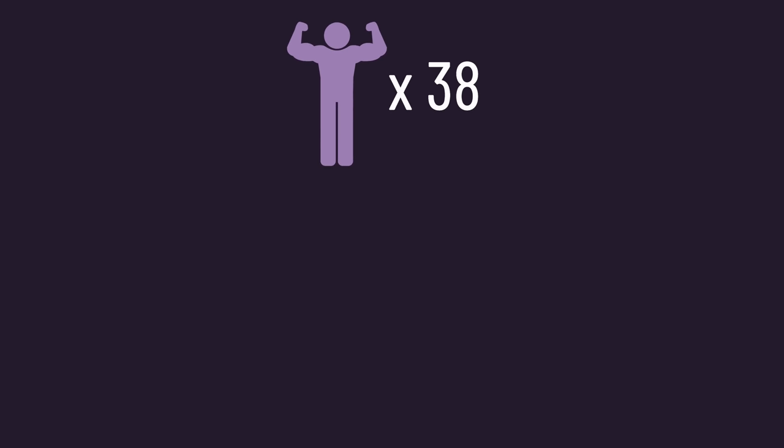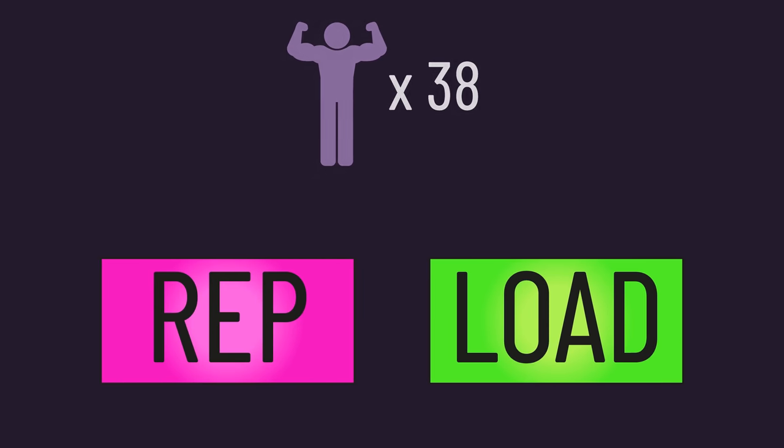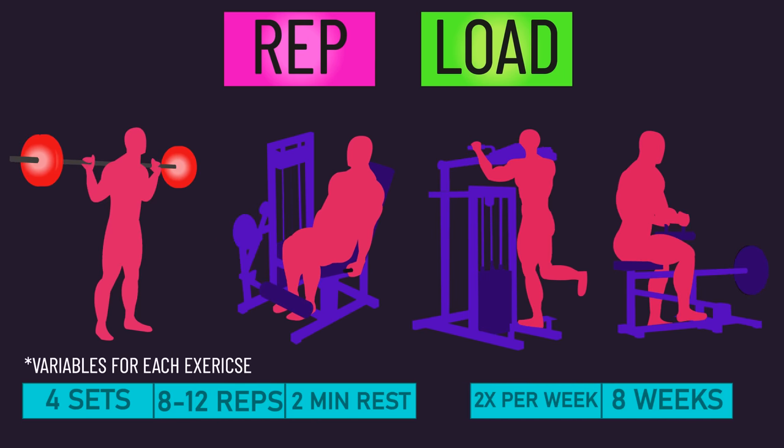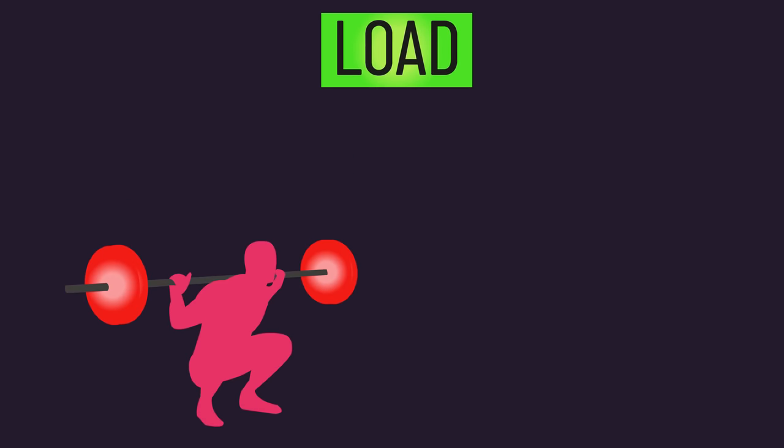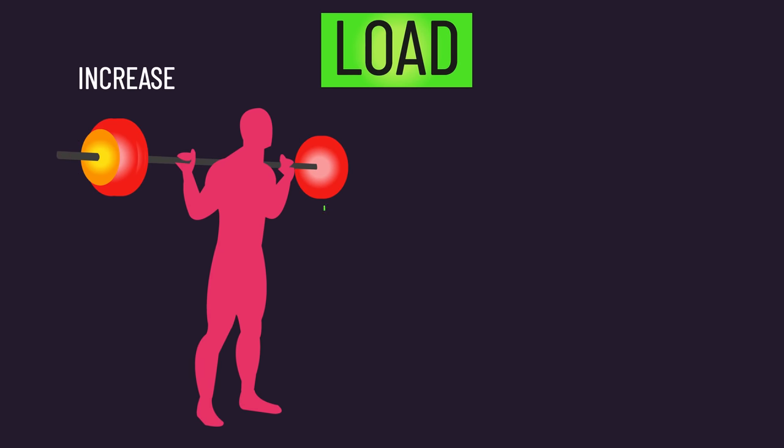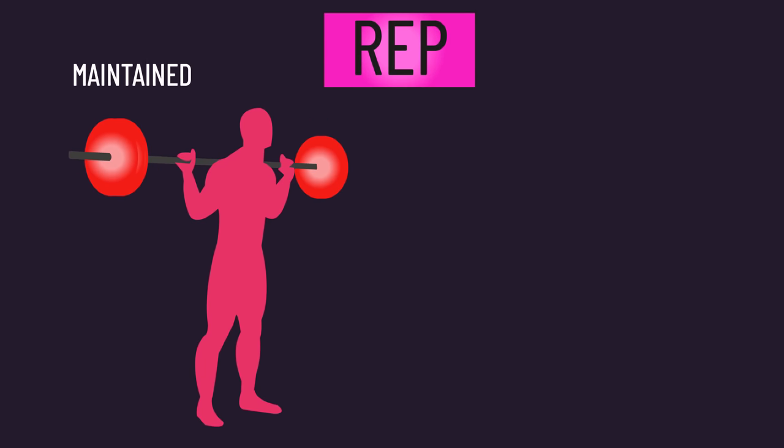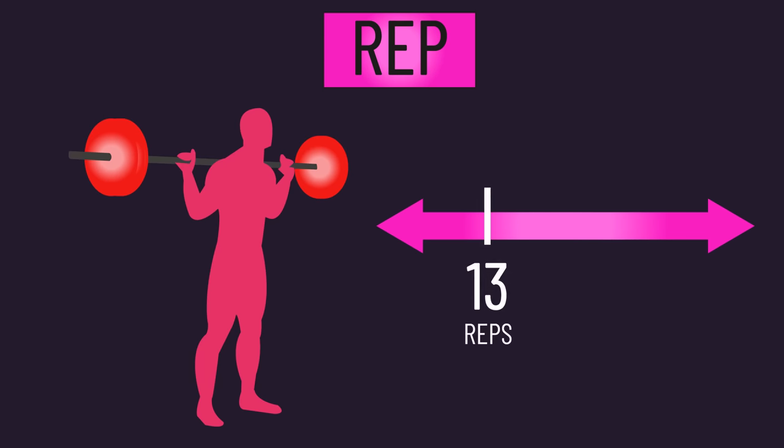38 trained individuals were randomly assigned to a load or rep group. All subjects trained these four lower body exercises with these variables in the first session. The load group attempted to increase the load they trained with across sessions while staying within the 8-12 rep range. The rep group maintained the loads used in the first session and aimed to perform more repetitions across sessions on their exercise sets.